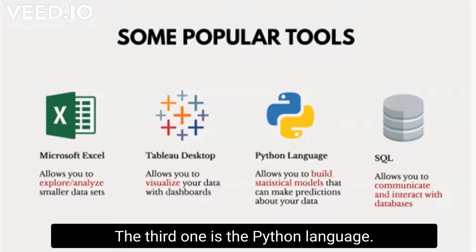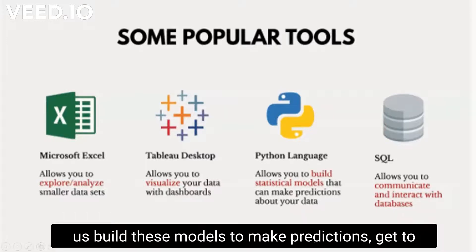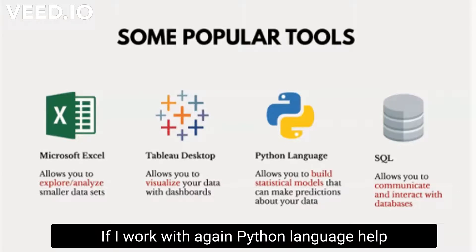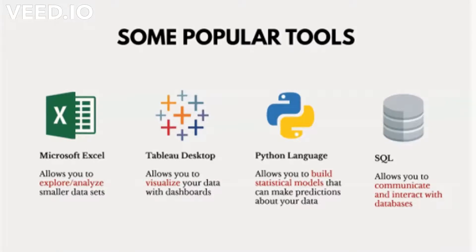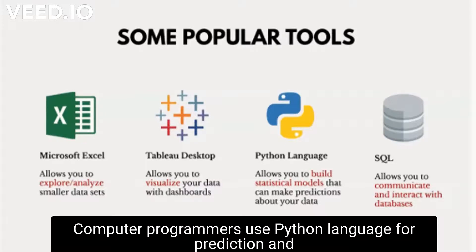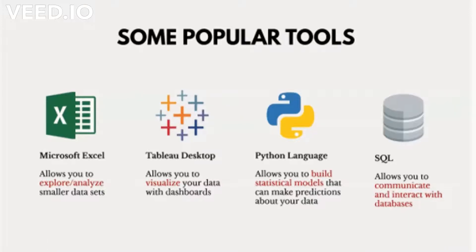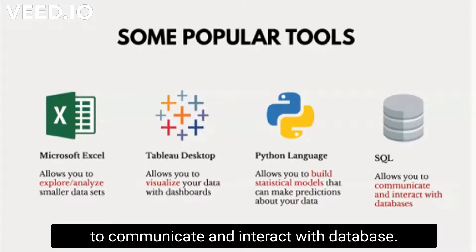The third tool is the Python programming language. We could use Python to help us build models to make predictions, and it also helps in visualizing datasets for prediction and many other things. Mostly computer scientists and computer programmers use Python for prediction and visualization of datasets. We could use SQL to allow us to communicate and interact with a database.